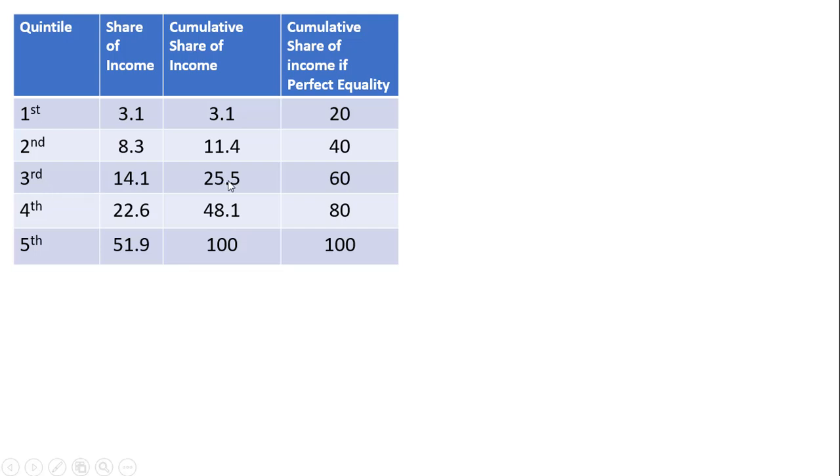To get the bottom 60%, we add up the share of income going to the first three quintiles, and we get 25.5% or 14.1% plus 11.4%. The share of income going to the bottom four quintiles is 48.1%.